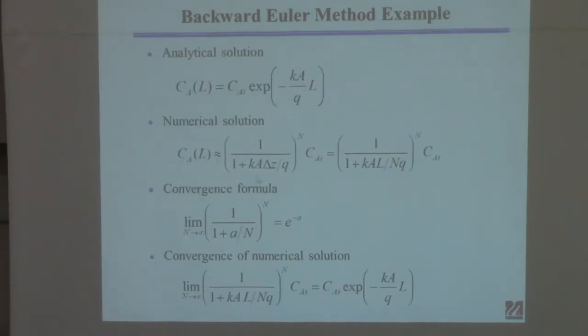So that's just rewritten from the previous page. There's nothing new here. That's just the numerical solution from the previous page. And here I've made the, it may not be obvious to you, but to get from this point to this point, I have used the fact that delta z is equal to L divided by, that's a really weird L. There we go. Divided by n. Okay?